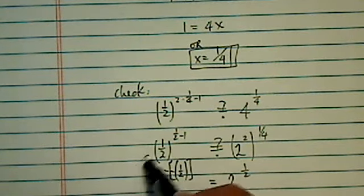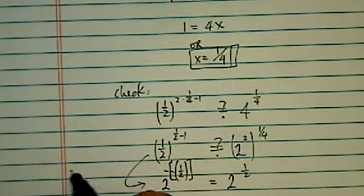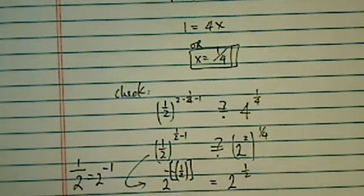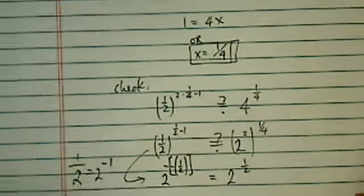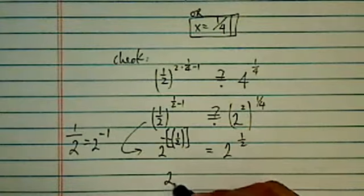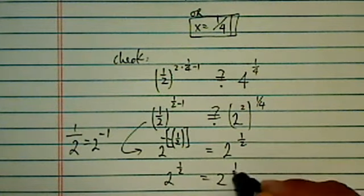So this is because 1/2 is equal to 2 to the minus 1. I missed this minus sign. So as you can see, 2 to the 1/2 is equal to 2 to the 1/2.